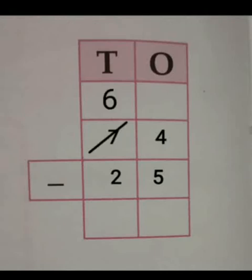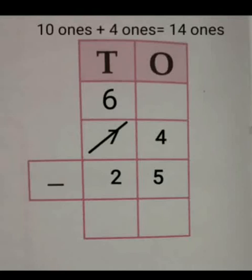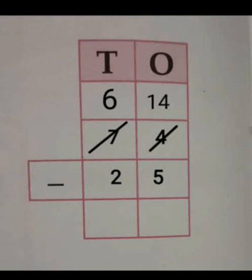Here, 6 tens are left. Write 6 at the tens place. 10 ones and 4 ones is equal to 14 ones. Write 14 at ones place. Now, subtract 5 from 14. Answer is 9. Write 9 at the ones place.